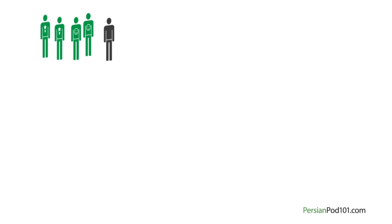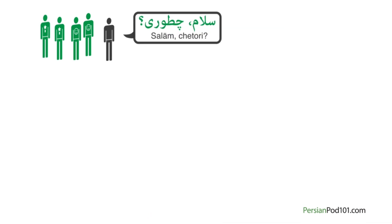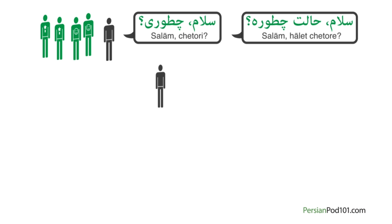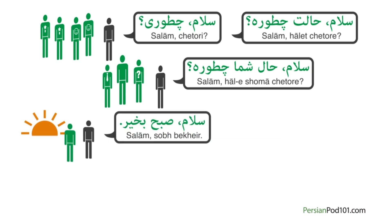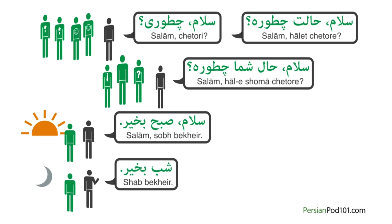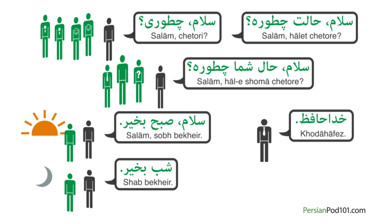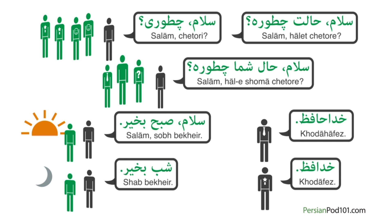Now you have learned many different ways to greet people in Persian. Let's review them all one more time. When meeting friends or relatives — informal greeting. When meeting a stranger, someone older, or someone we don't know well — formal greeting. To say good morning: Salaam, sob bekhayr. To say good night: Shab bekhayr. When leaving formally: Khodahafiz. When leaving informally: Khodahafiz. It's easy, isn't it?